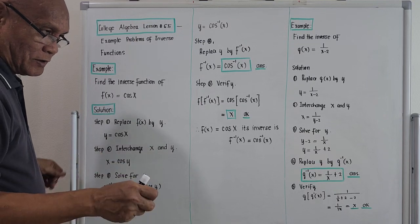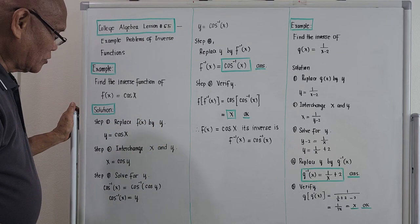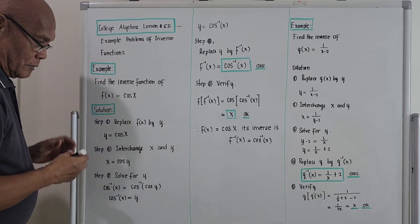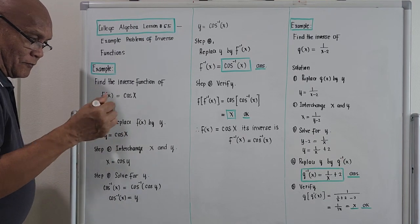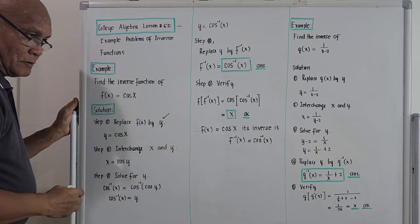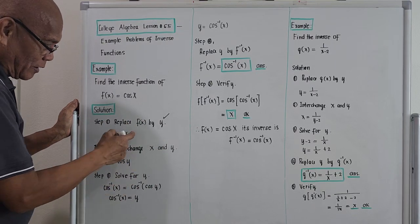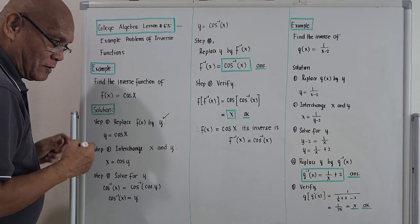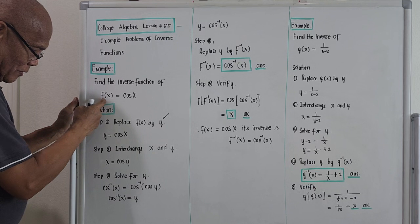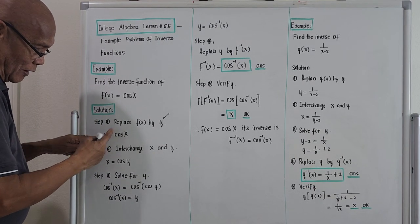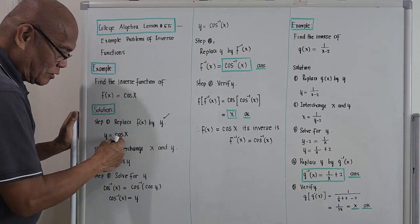This was the one I was discussing last night. It's a simple problem, but the important thing is the concept of how to get the inverse function. Step number one: replace f of x by a variable y. You can take any variable you want, but for this illustration I will represent f of x by simply y. So replacing in the original equation, the left hand side will be y and the right hand side will still be cosine of x.